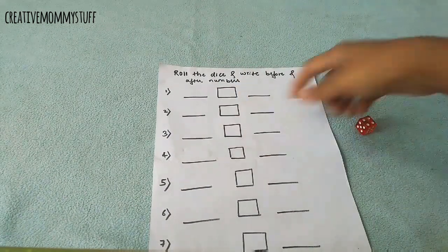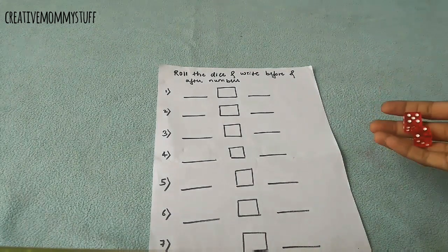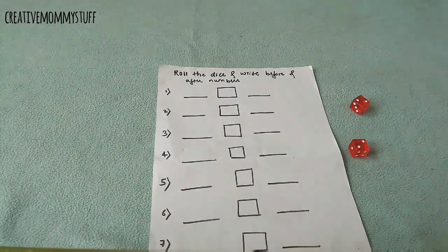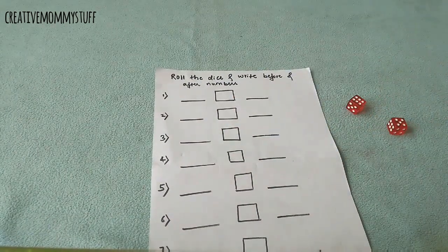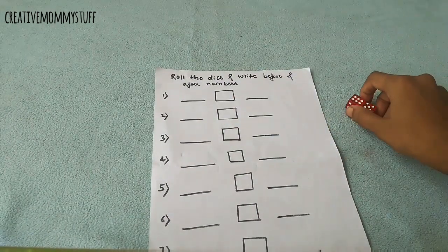We can increase the difficulty by using two dice or by using three dice. So two plus two will be four. She has to write it, four. So like this we can use five plus six will be eleven.